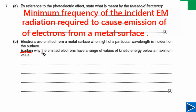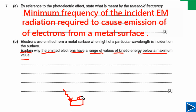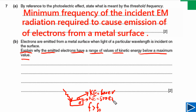Part B is asking us to explain why emitted electrons have a range of values of kinetic energy below a maximum value. If we have a metal surface and shine light on it, electrons will be emitted if the frequency of electromagnetic radiation is greater than the threshold frequency. For example, one electron emitted from the surface might have 600 electron volts of kinetic energy, while another emitted from below the surface might have 500 electron volts.